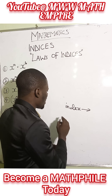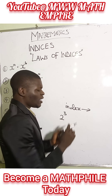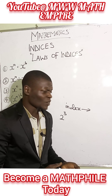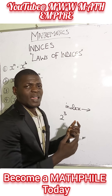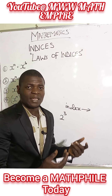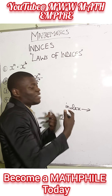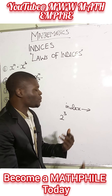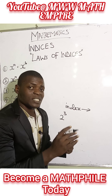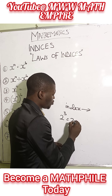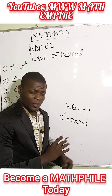Take for instance, we have 2 raised to the power of 3, and this 3 here is the index. The index is a Latin word meaning indication or points out. So this 3 is now indicating that it's going to be 3 times that we are going to use 2 in a multiplication — 2 times 2 times 2.